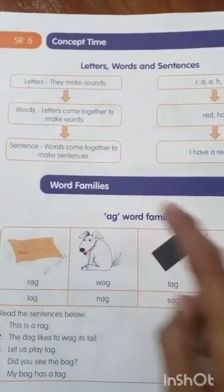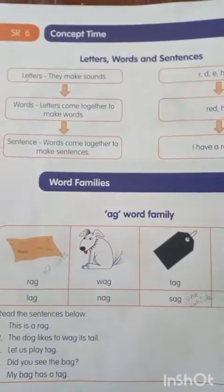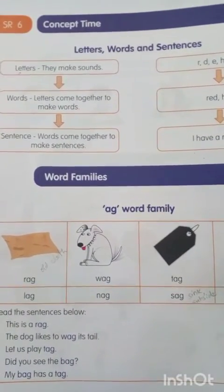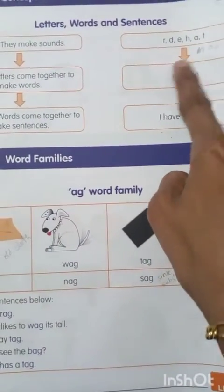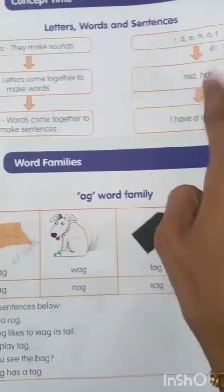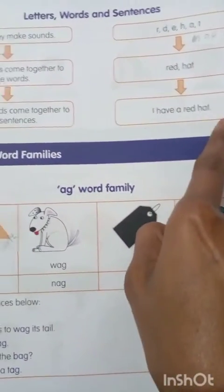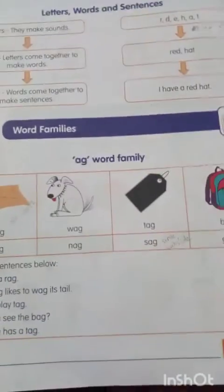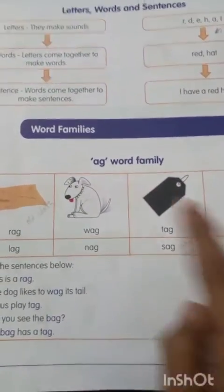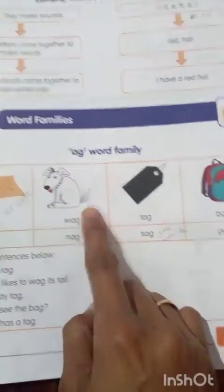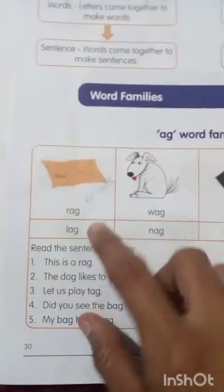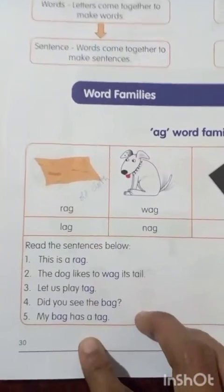Sentences: words come together to make a sentence. We also learned the AG word family — rag, wag, tag, bag. Sentences with these words were also given.